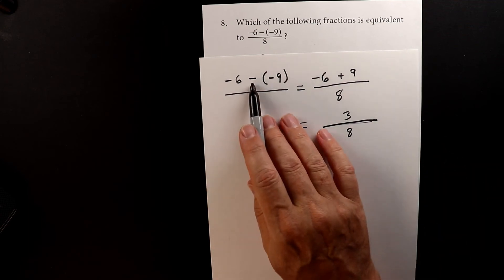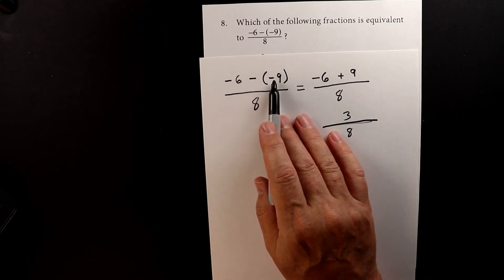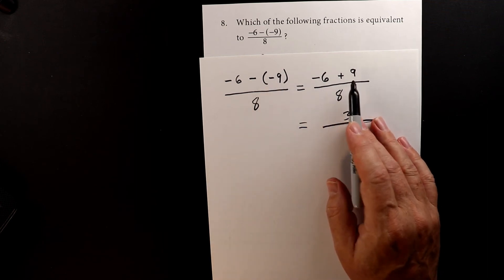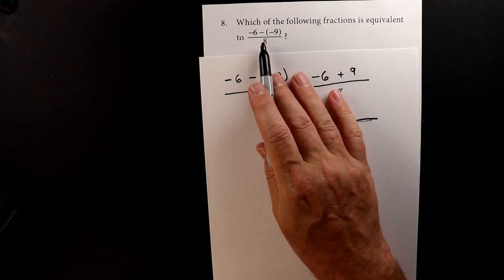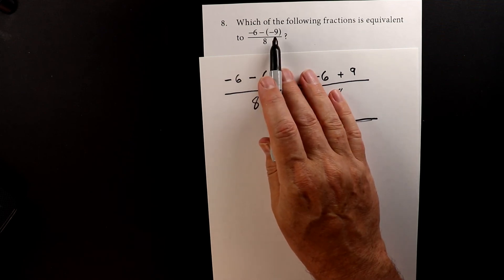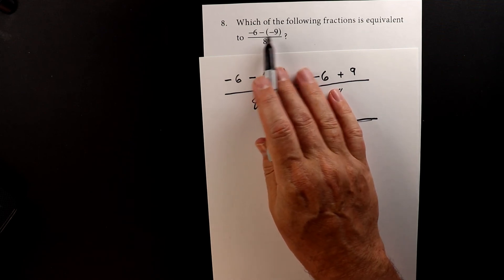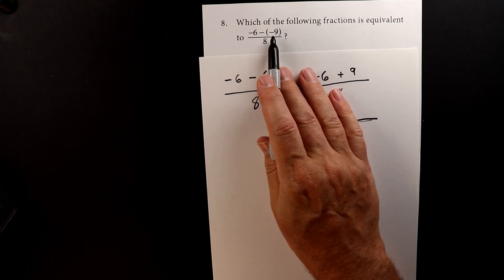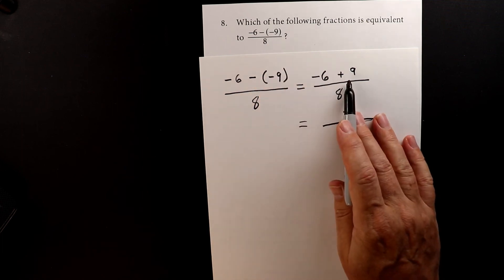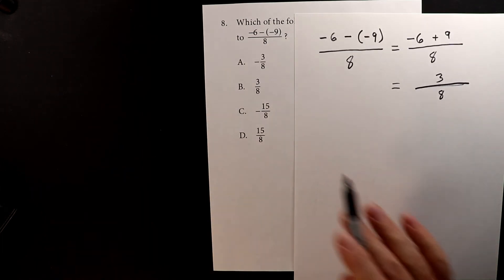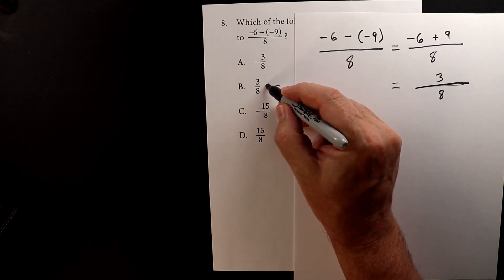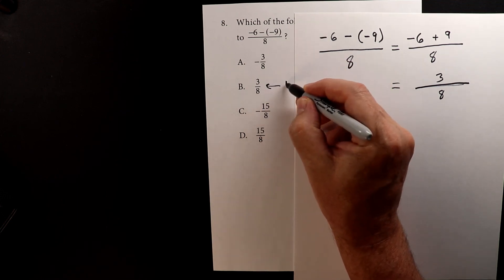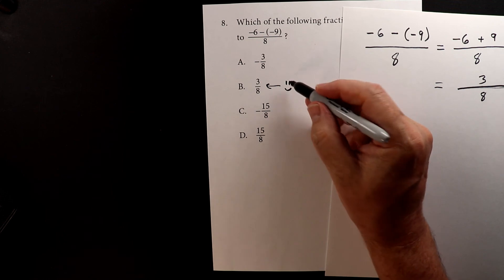A negative in front of a negative turns it into a positive — that's the key point for this question. It's not a trick, it's just understanding positive and negative signs. Here we have two negatives in a row, which turns them into a positive. So we find our answer here as letter B, which is the correct answer.